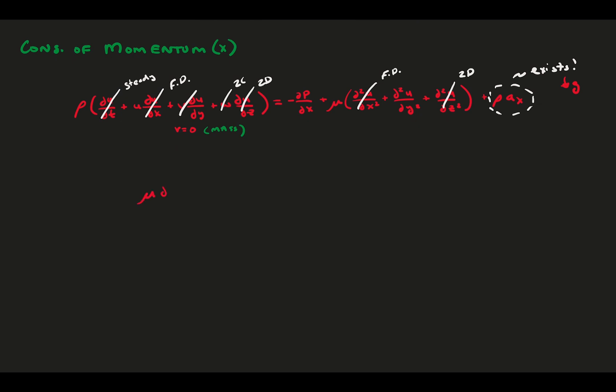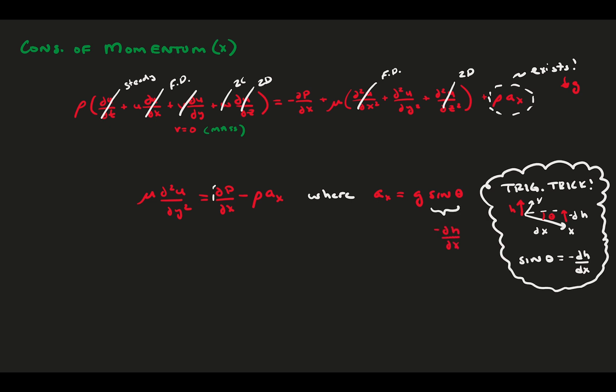This gets us that the viscous term is balanced by the pressure and the body force terms. Here, the acceleration of the body force term in the x direction is the x component of gravity, because x and y are aligned with the flow, not gravity. So, a sub x is g sin theta. However, we can be a bit tricky with some trigonometry. If we look at the orientation of x and y and h as we set it up, notice the angle between x and the horizontal is theta. If we make a triangle where the hypotenuse length is dx, some length x, and the side length is negative dh because it goes below the horizontal, we find that sin theta is negative dh over dx. The reason we did this is because there is a partial derivative with respect to x on the pressure. If we can also get the partial derivative on the gravity term, it can be pulled out just like this.